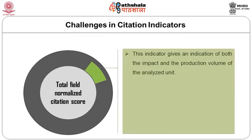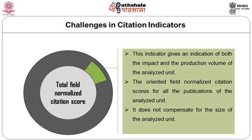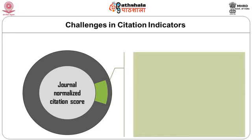Field normalized score corresponds to the relative number of citations to publications from a specific unit compared to the world average of citations to publications of the same document type, age, and subject area. The limitations of this indicator include that if normalization is done at the article level, a few highly cited articles in a moderately cited research area may contribute disproportionately to the value of the field normalized citation score, and it does not compensate for the size of the analyzed unit.